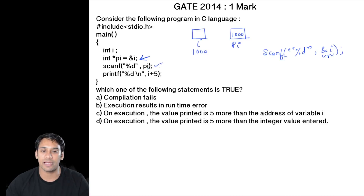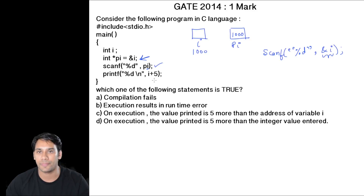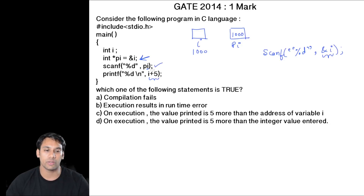In the next statement we have printf("%d", i+1) — so whatever value of i we have taken from the user, we are going to add 5 to that value.